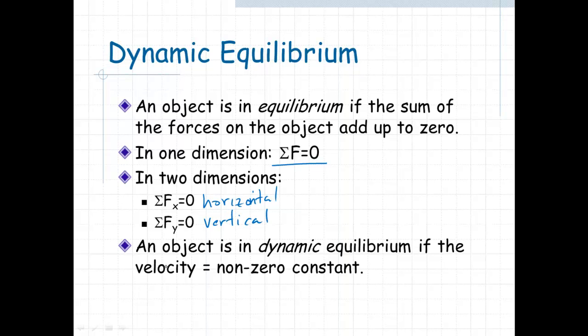An object is in dynamic equilibrium if the velocity is a non-zero constant, whereas static equilibrium was when the velocity was equal to zero.